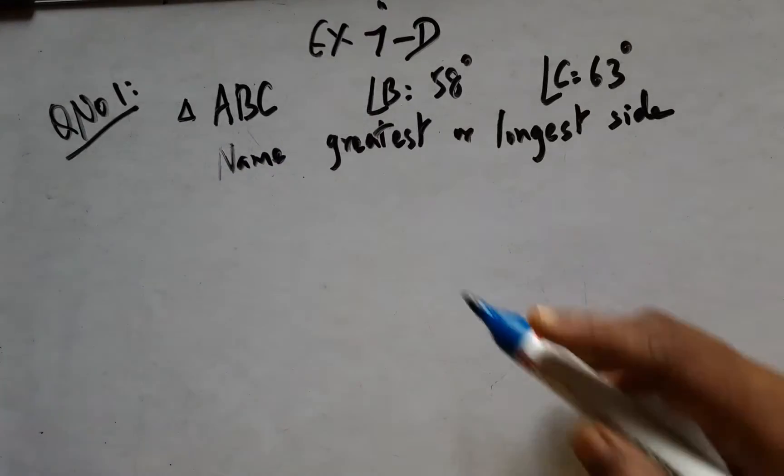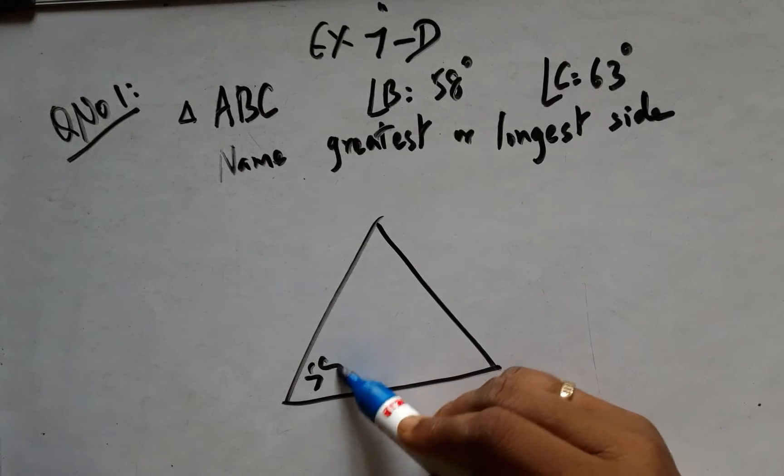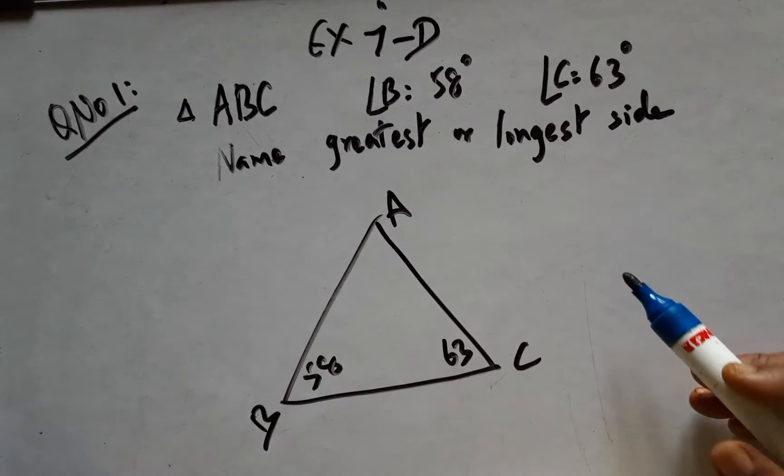Question 1, Exercise 7D: There is a triangle ABC wherein angle B is 58 degrees and angle C is 63 degrees. Find the greatest or the longest side.